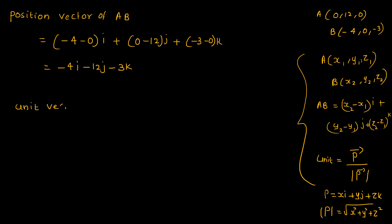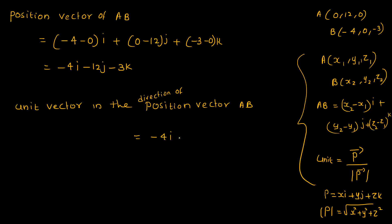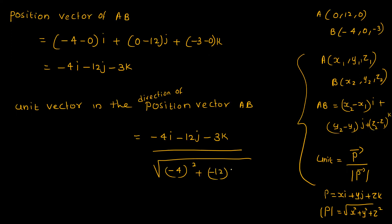The unit vector in the direction of position vector AB is equal to minus 4i minus 12j minus 3k divided by the root of minus 4 squared plus minus 12 squared plus minus 3 squared, which equals minus 4i minus 12j minus 3k divided by 30.